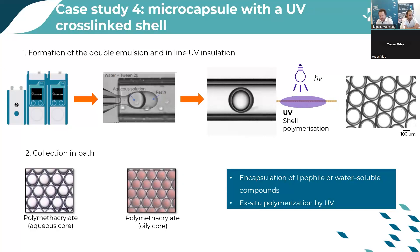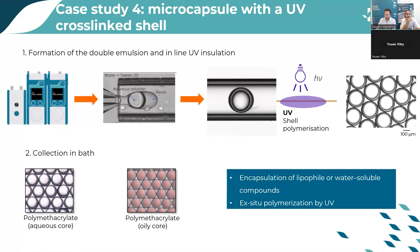In the last case study, microcapsules are produced with a UV cross-linked shell. A polymethacrylate microcapsule is produced by generating an oil-in-water-in-oil double emulsion with water and photoinitiator as the continuous phase, polymethacrylate as the shell phase, and an aqueous or oily phase in the core. While the double emulsions flow in the outlet capillary of the ReDrop, UV light is used to cross-link the shell, and the microcapsules are collected in a bath. This case study demonstrates the adaptability of the encapsulation platform to handle another type of microcapsule with a UV cross-linked shell.